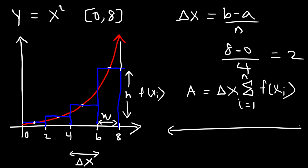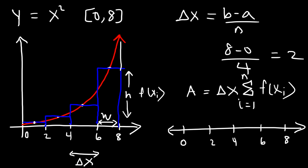We create a number line from a to b, 0 to 8, with n equals 4 subintervals. For left endpoints we'd choose 0, 2, 4, and 6 — an under-approximation for an increasing function. For right endpoints we'd use 2, 4, 6, and 8 — an over-approximation. Using the midpoint rule, we take the midpoint of each subinterval: 1, 3, 5, and 7.